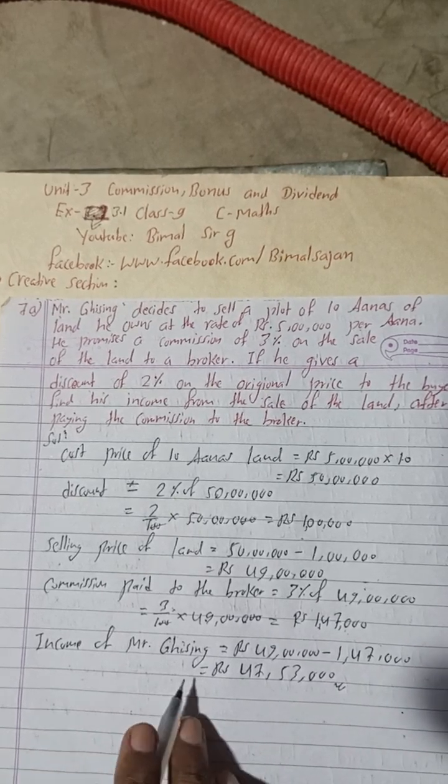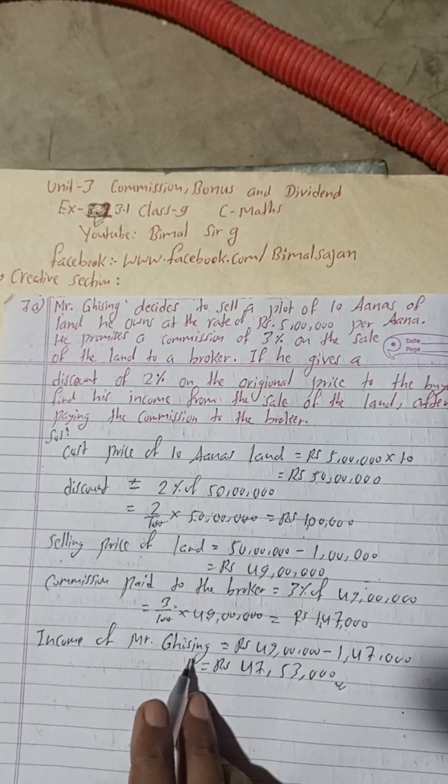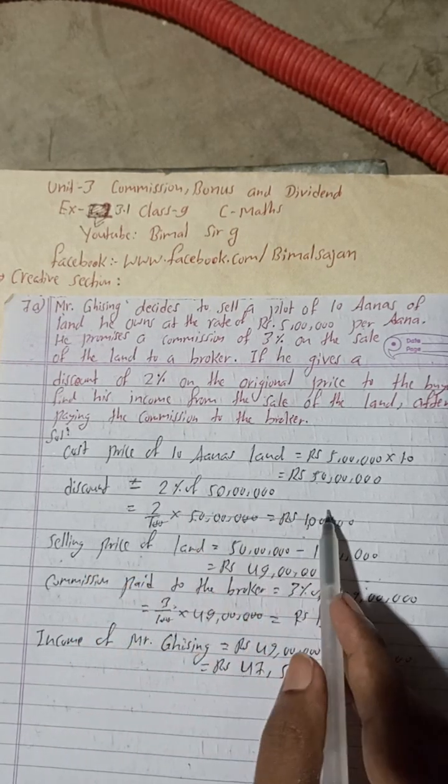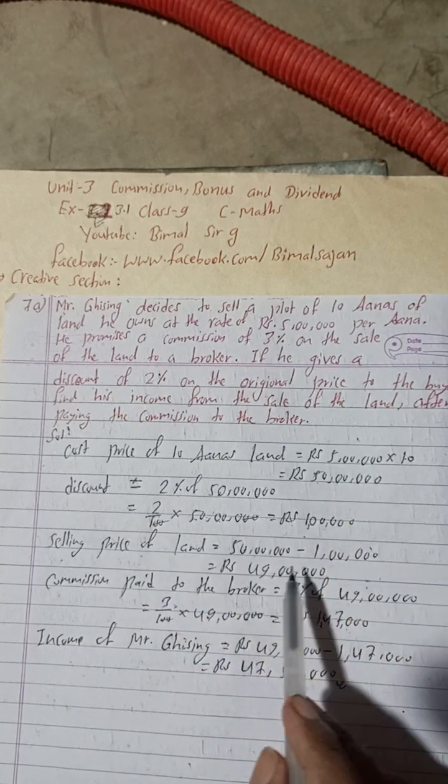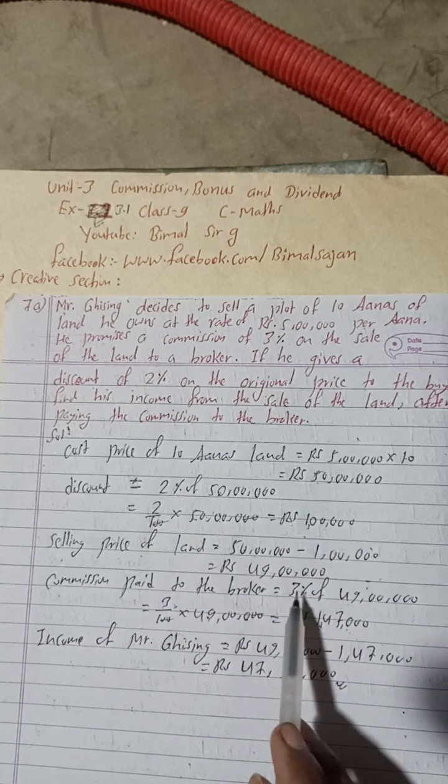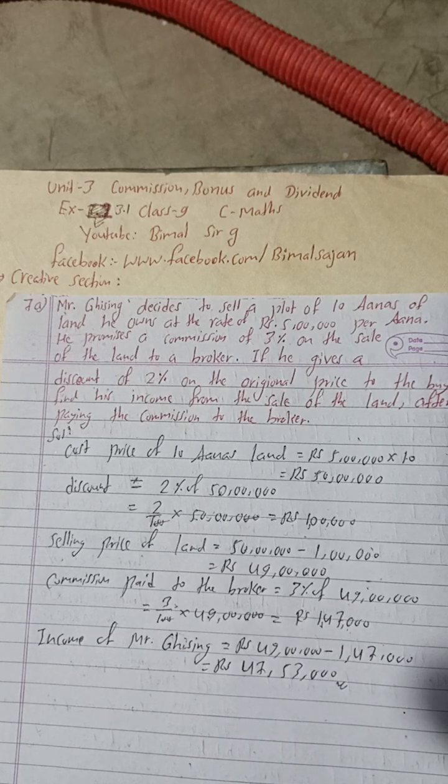This is the total income of this Mr. Ghi Singh, because he 2% discount, okay, he discount, so we have to subtract from this 50,000, okay. After discount price, okay, we have to apply this 3% commission. So this is the total solution of this 7A, class 9 and 10 students.